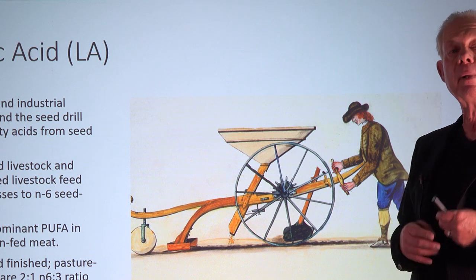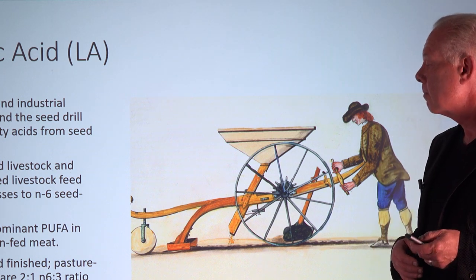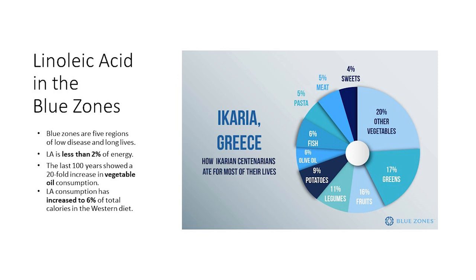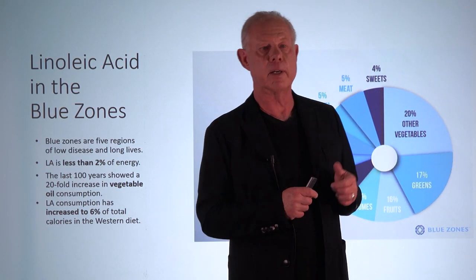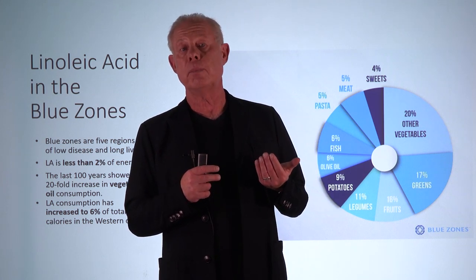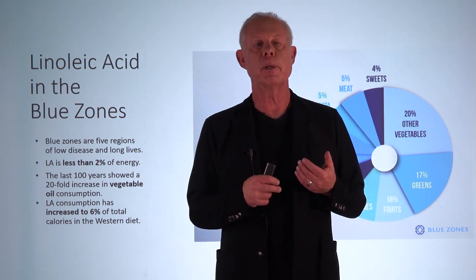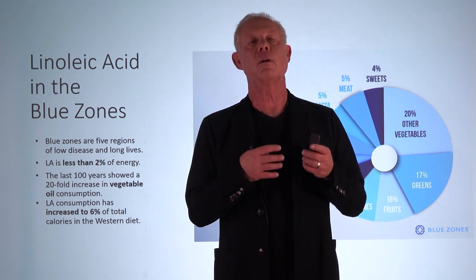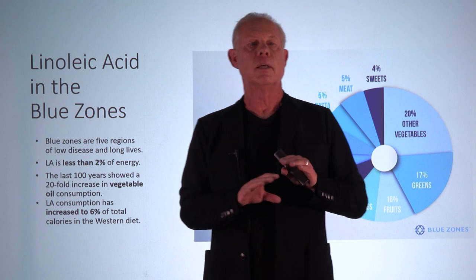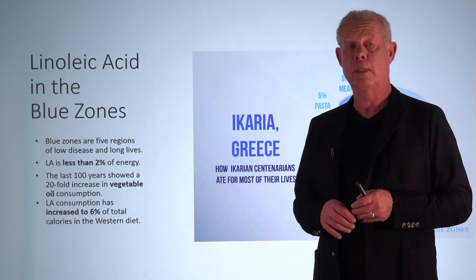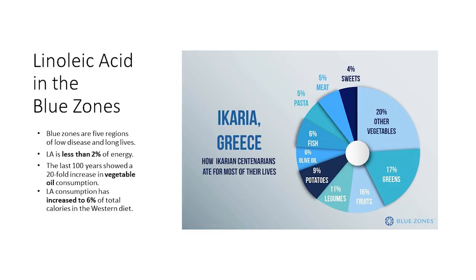The dominant form in the animal became arachidonic acid. Linoleic acid in the blue zones represents less than two percent of dietary intake of calories. In these blue zones — areas where people live extraordinarily long, with large numbers living to their hundreds — there is very low heart disease, very low risk of diabetes, and most chronic disease is eliminated. Their diet is two percent omega-6, while our diet has increased to six percent of total calories from linoleic acid.